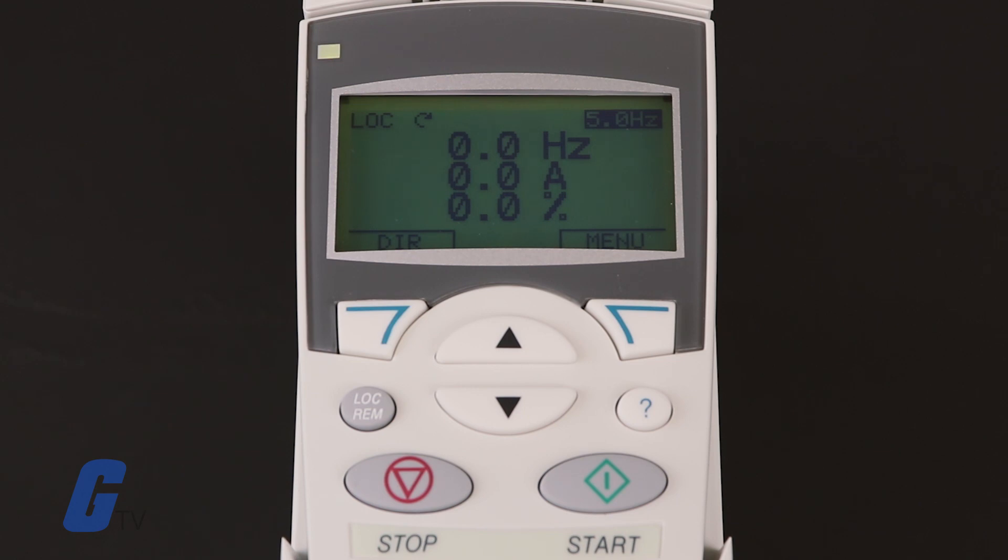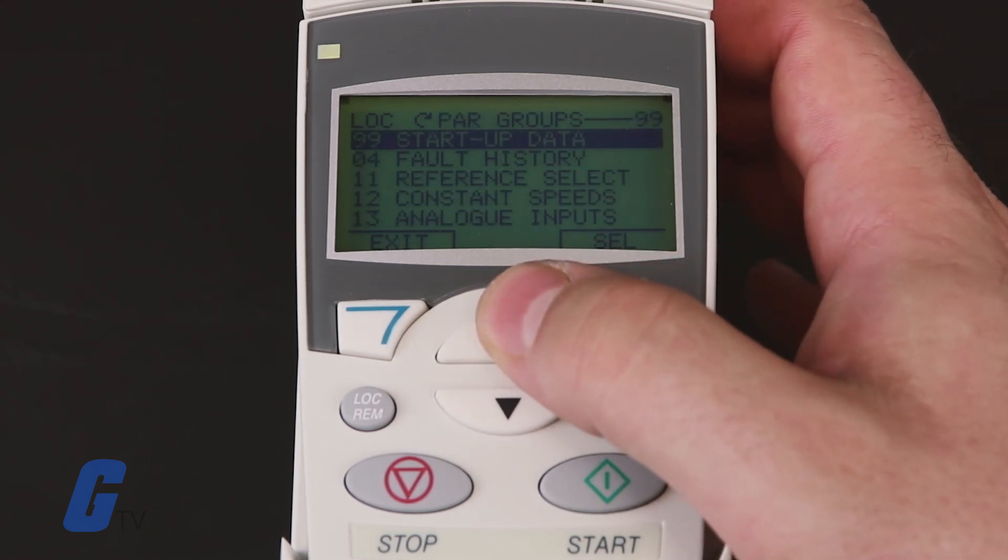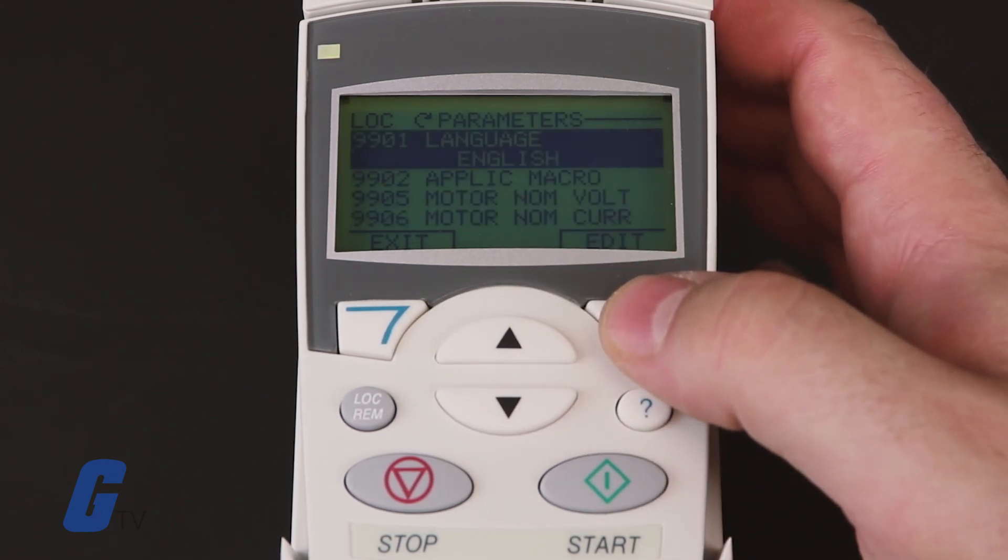If your motor is moving in the correct direction, then continue on to the final check. If not, set parameter 9914 to the opposite value it is currently at.